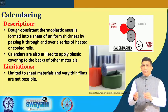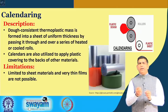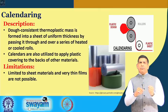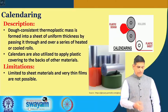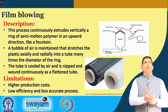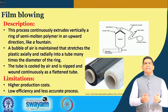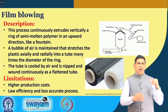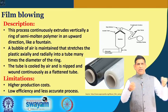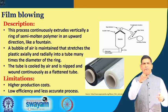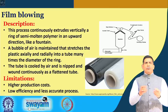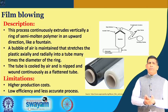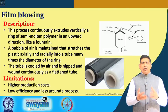The limitation for calendaring is that very thin films are not possible — in a very thin film it will not withstand the stress that goes through the calendaring process and may tear apart, so you need to have a certain thickness. Film blowing is another process where you can go for thinner material. Here you are continuously extruding vertically over a semi-molten polymer — like a fountain — with an air bubble maintained, stretching the material into a film of the required thickness. The problem is it is costly because the process gets complicated, with low efficiency.